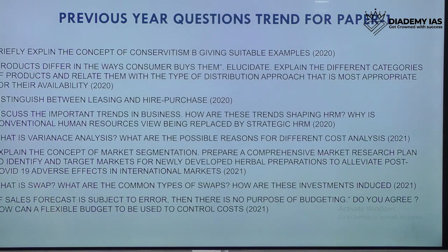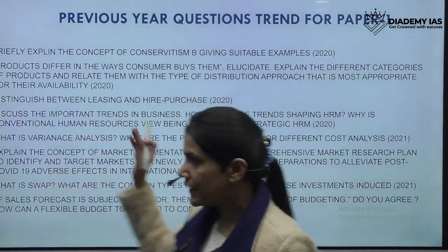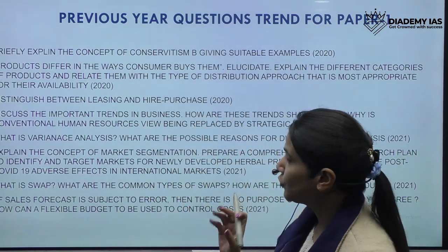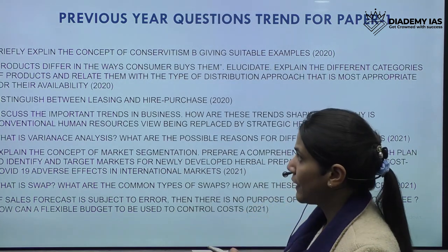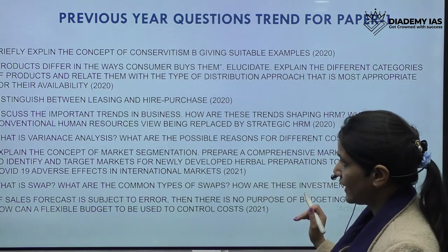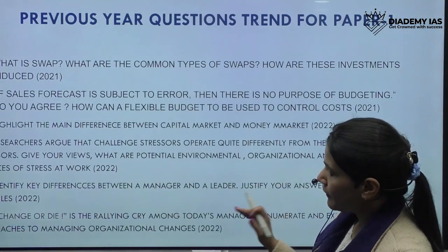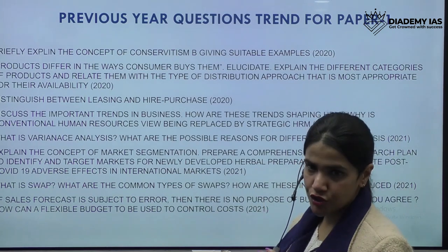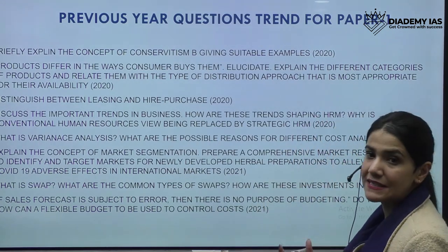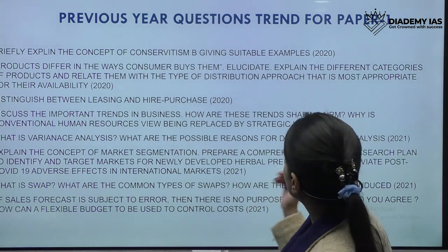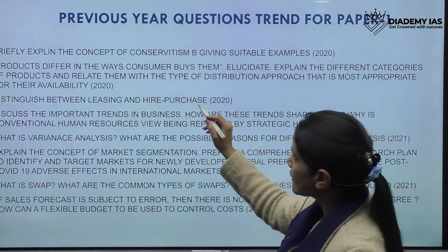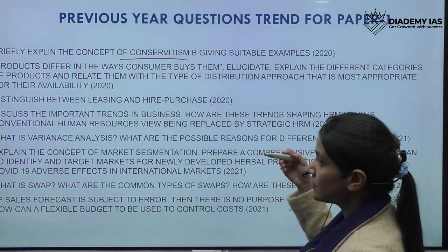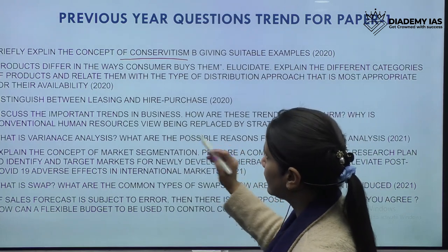Now let's move on to the previous year questions trend for Paper 1. I've made a list for the past three years — a small example to understand what kind of questions are asked. For 2020, there is a factual question asking about the concept of conservatism with a suitable example. In the same year, a question says: products differ in the ways consumers buy them — explain the different categories of products and relate them with the type of distribution approach.